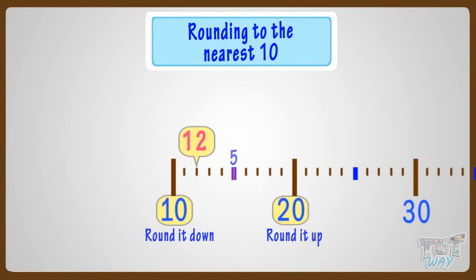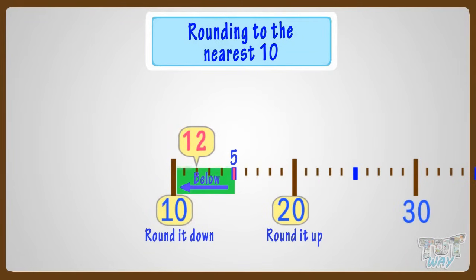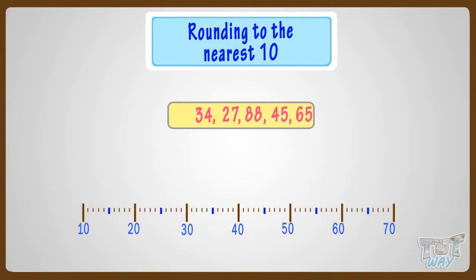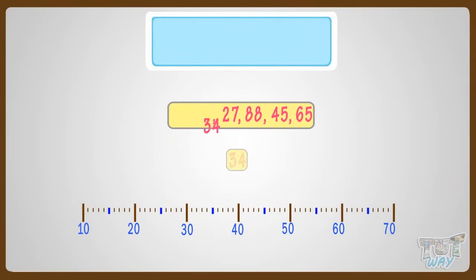Here is a rule to help you. You always have a five mark midway between the two tens. If the number is below the five mark, you round it down — that is, to the previous ten. And if the number is at the five mark or above the five mark, you round it up — that is, to the next ten.